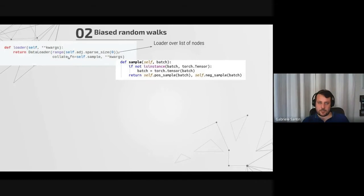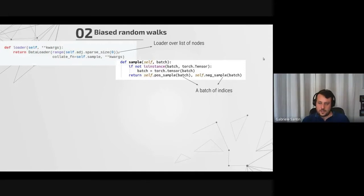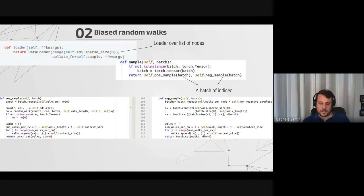We also pass a sampling function. The collate_fn is the function used when we randomly sample from this set. This is the implementation within the class: the first part checks that the type is correct. Then it returns two elements — a bunch of positive samples and a bunch of negative samples. The batch here is just a list of indices, really just a few node indices in the graph.